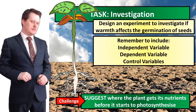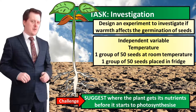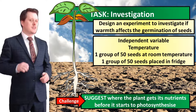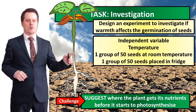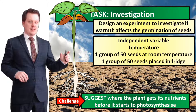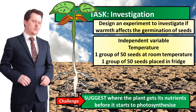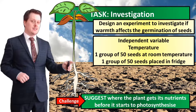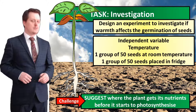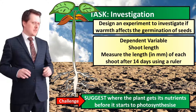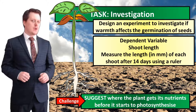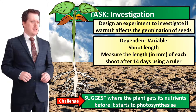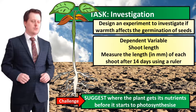Here is one possibility for the investigation. My independent variable is the thing I change — I am changing the temperature. I've split my seeds into two groups: one group at room temperature and one group in the fridge. I've used 50 seeds in each group, which allows me to take a mean average of my results, find any anomalies, and add more validity to the experiment. My dependent variable is the thing we measure — I am measuring the length of the shoot in millimetres after 14 days using a ruler.